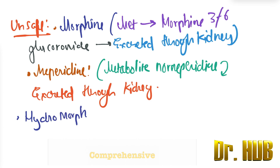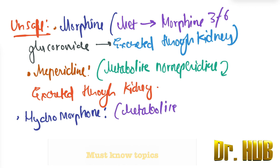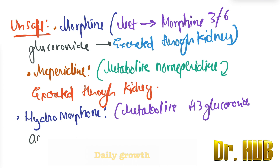We also have hydromorphone. Hydromorphone has a metabolite, hydromorphone-3-glucuronide, which accumulates in patients with renal failure, making it unsafe.